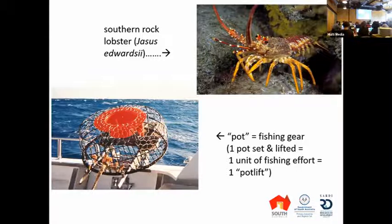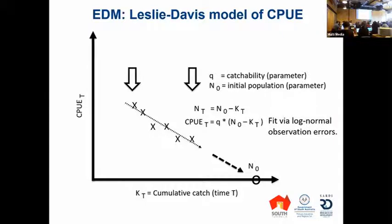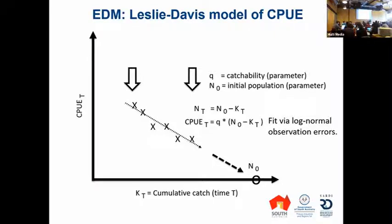That's an example of an effort unit — a pot. This is just basic Leslie-Davis modeling. It assumes that nothing else is happening except catch — you have an initial population, no natural mortality. You start from the left and go to the right. As more catch accumulates, the population depletes, which also correlates with time. CPUE is just a simple linear model: catchability times the depleting population during the depletion period.